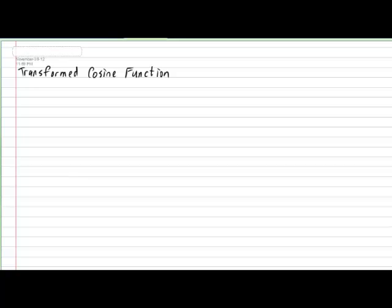Hi everyone. In today's lesson we'll be taking a look at the transformed cosine function. So in your notebook please put down today's subtitle: transformed cosine function. The transformed cosine function has the following format: y equals A cosine of B times x minus H plus K. The transformed cosine function has a lot of elements packed into it, so let's go over each element slowly.